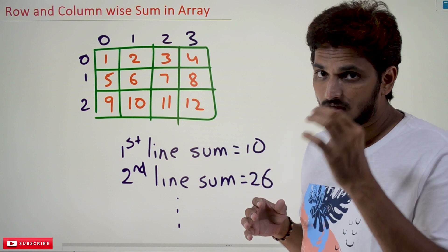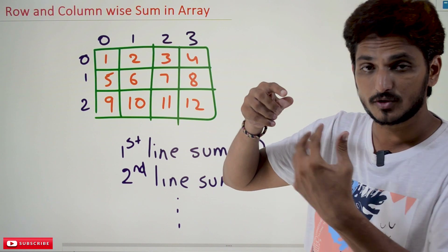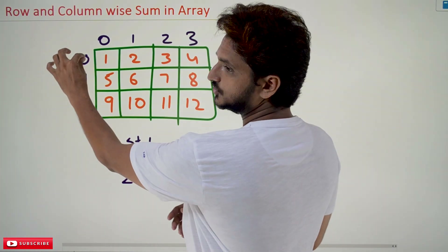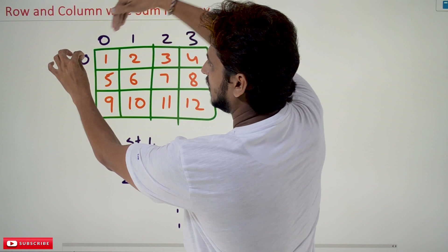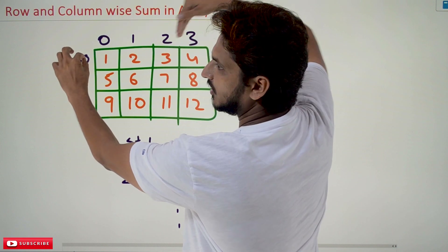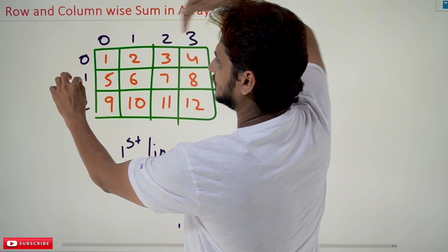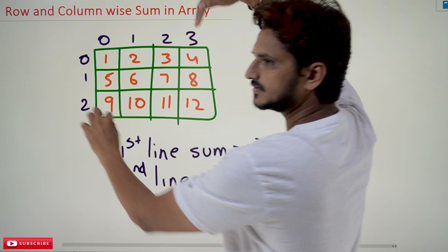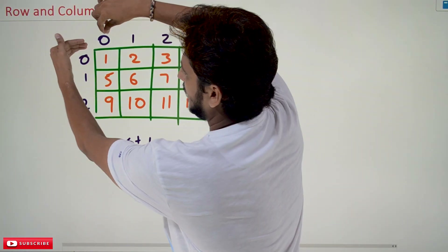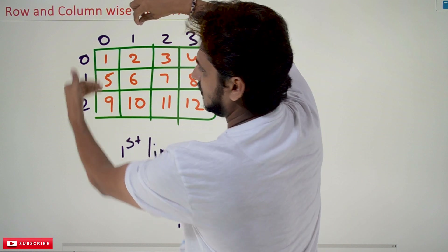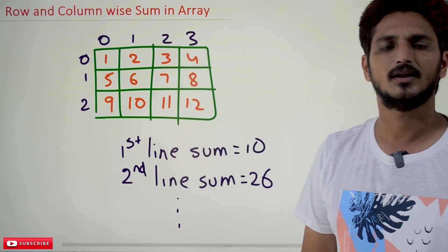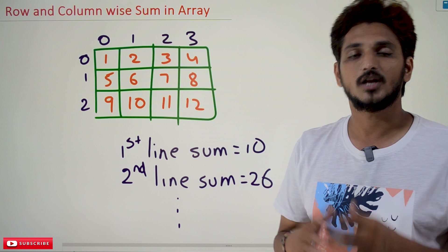This is the graphical visualization you should have in your mind before you write the code — it helps a lot in understanding programming. Take the zeroth row and go through column 0, 1, 2, 3 — fix the row and take all the columns. Similarly, take the second row, take all the columns; third row, take all the columns. Then for column-wise: take the first column, take all the rows; second column, all rows; third column, all rows; fourth column, all rows — and do the summation.